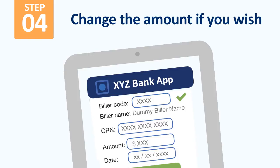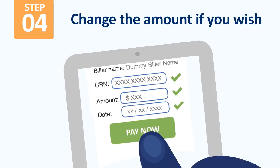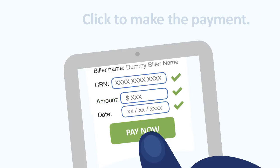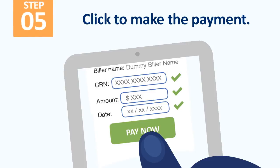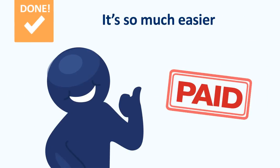The biller code and biller name, customer reference number, the amount and the due date. You then select the account you wish to pay from, and you also have the ability to change the amount if you wish. Click to make the payment. That's it. It's so much easier.